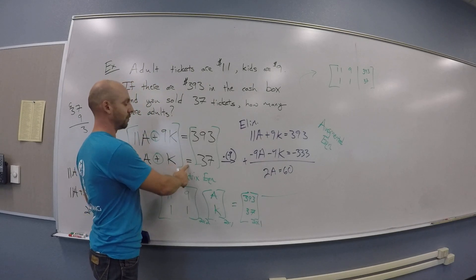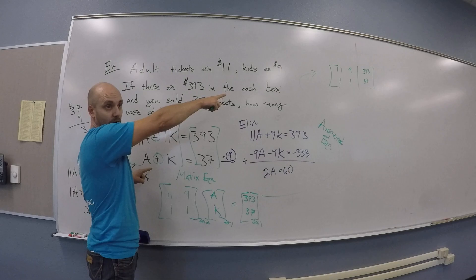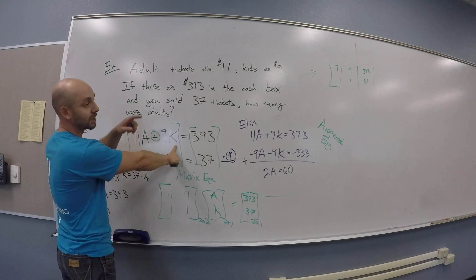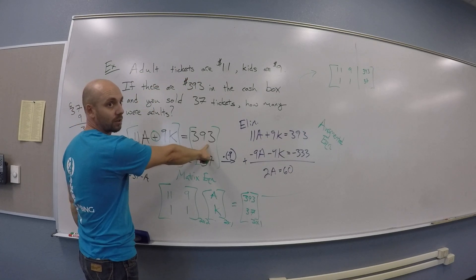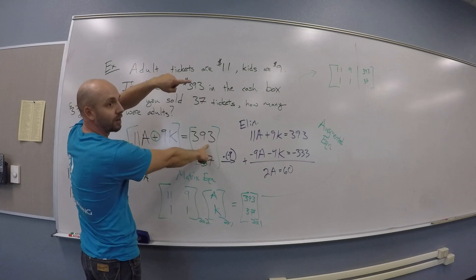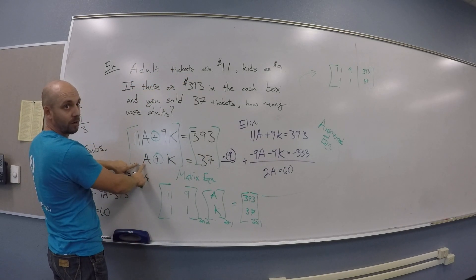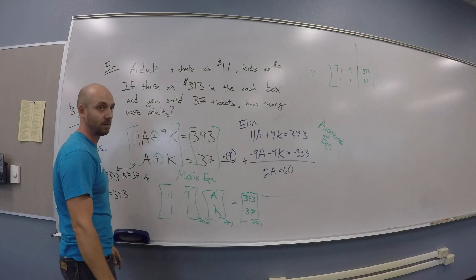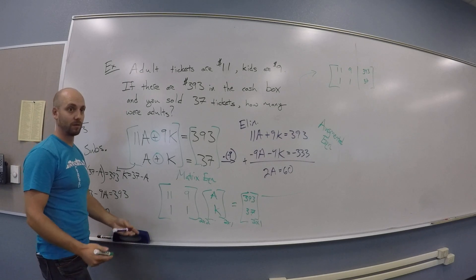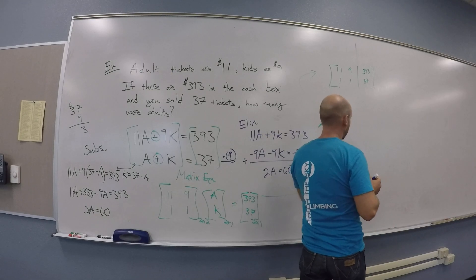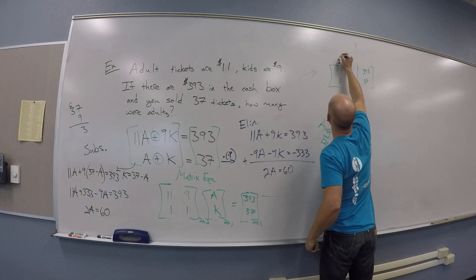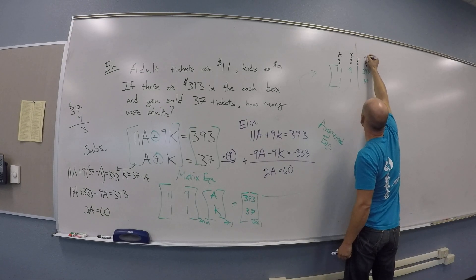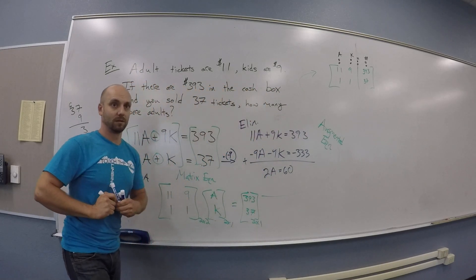You can jump from the set of equations to the augmented matrix pretty quickly — you just read the numbers off. So 11 times the first variable, 9 times the second gives you 11, 9. The vertical line is your equals. Then 393 on the other side. And 1 times your first variable plus 1 times your second variable equals 37, giving you the row 1, 1 | 37.